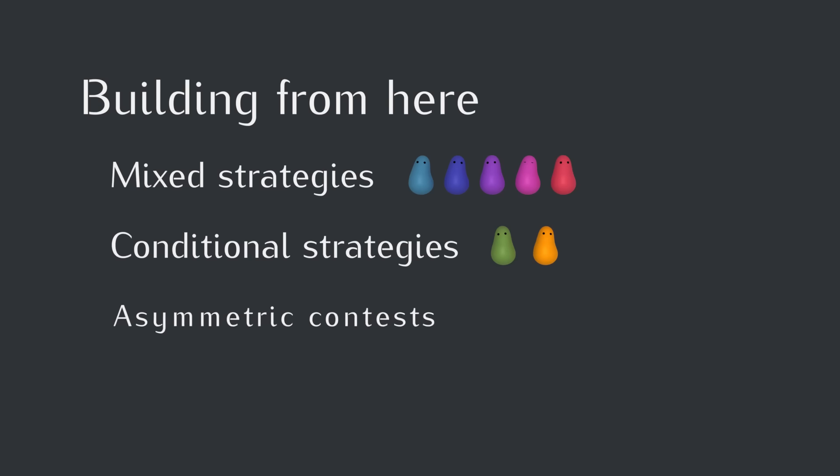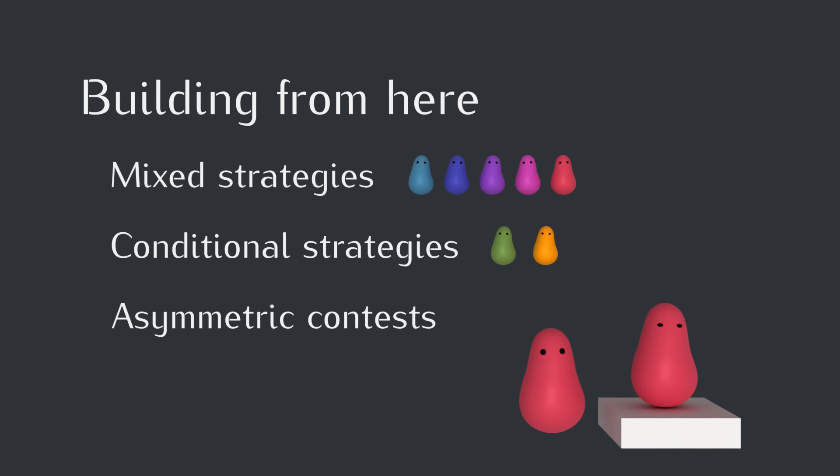Next, most conflicts are actually asymmetric. So far, we've been assuming that everyone has the same amount to gain and lose and that all the creatures are on equal footing. But when this changes, we can start to understand things like territorial behavior and dominance hierarchies.